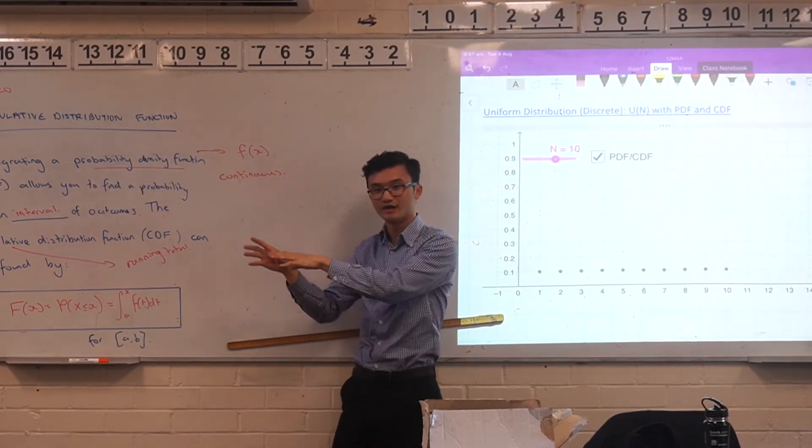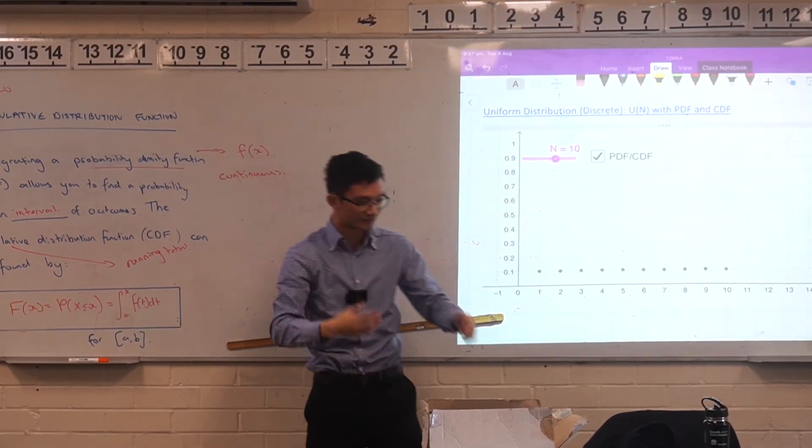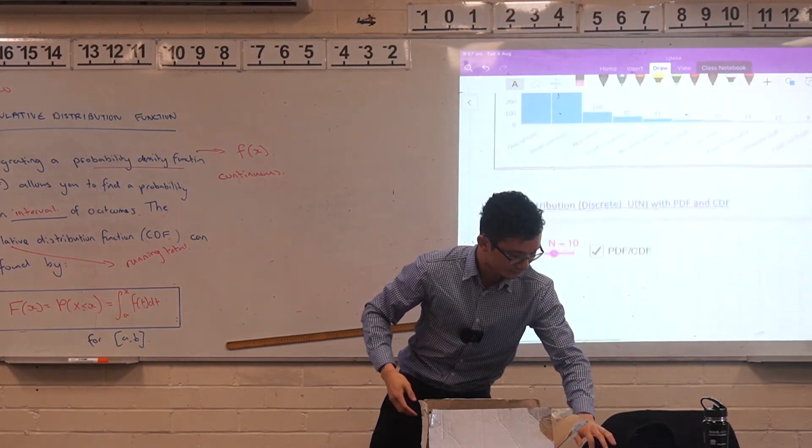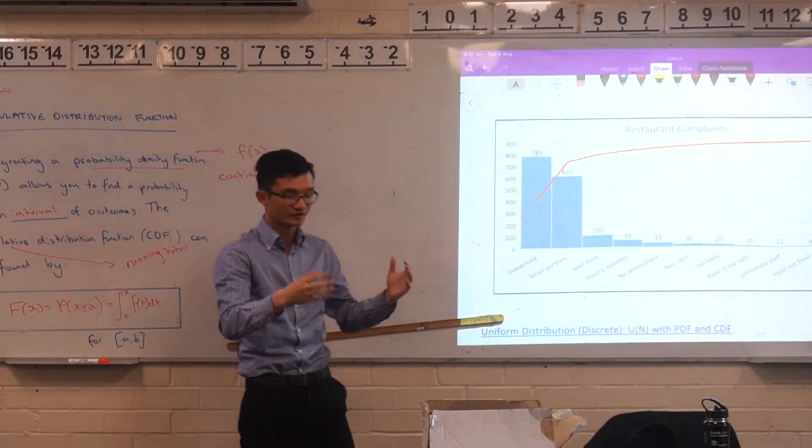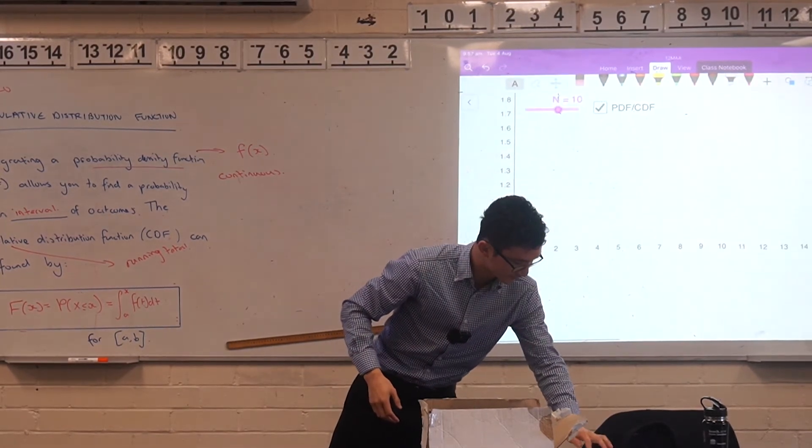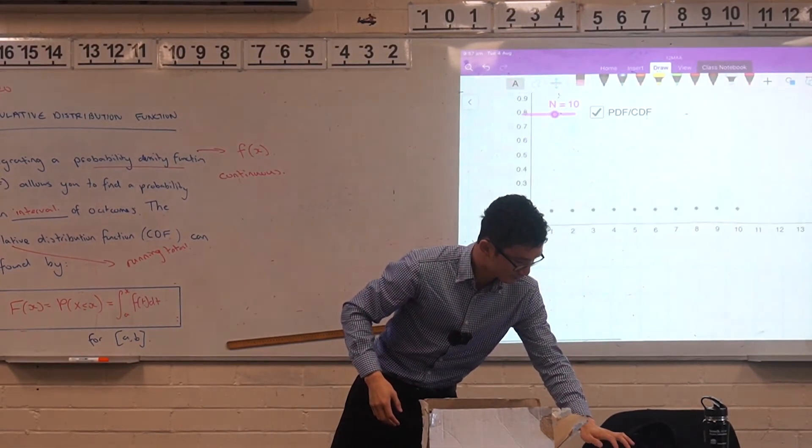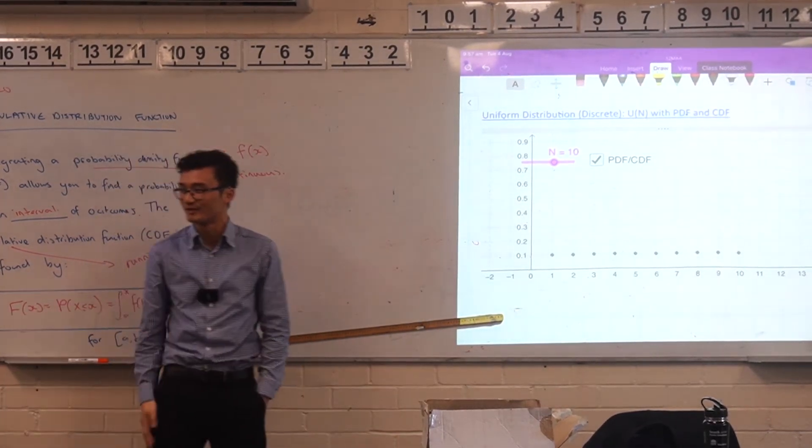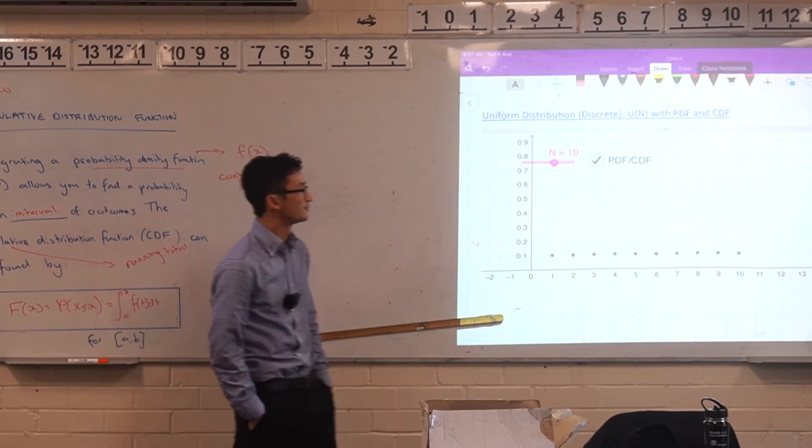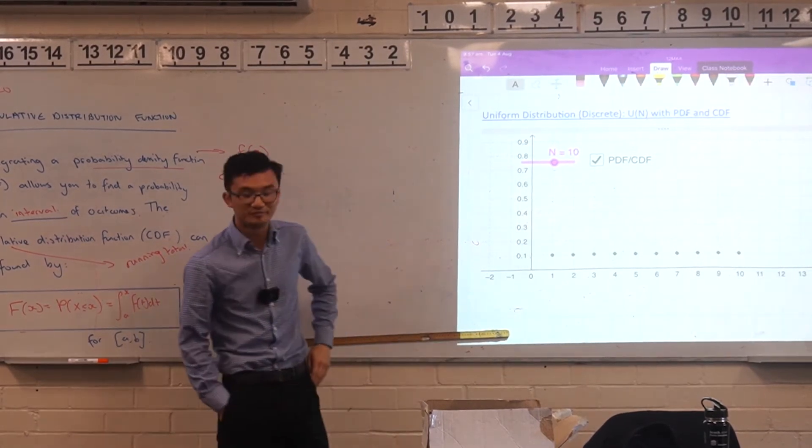So basically, we can have a representation where it's the probability density function, that's this representation, but we can also represent it as a cumulative distribution function. So just let me just say that again. The PDF and the CDF, they're two representations of the same thing, just like with the Pareto chart. These are the same situation represented slightly differently. So my question is, if I go back to this, what would this look like if I converted it?